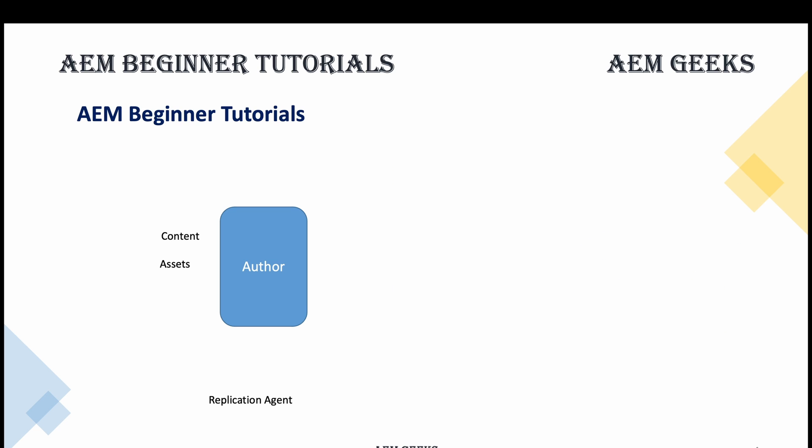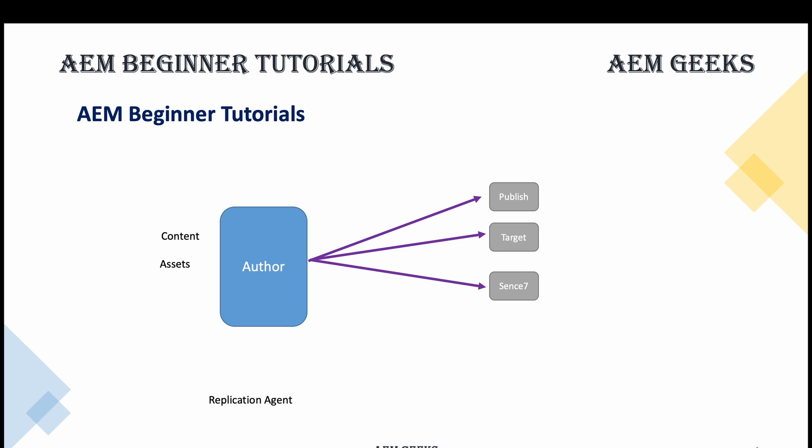Replication agents are not limited to author-to-publish. They can also send content to any product in Adobe Cloud or any third-party tool. For example, you can create a replication agent from author to Adobe Target. You can also create a replication agent to move content to any third-party platform — for instance, if you're running an e-commerce site on Salesforce Commerce Cloud and creating content on AEM, you can set up a replication agent to move content to that platform.